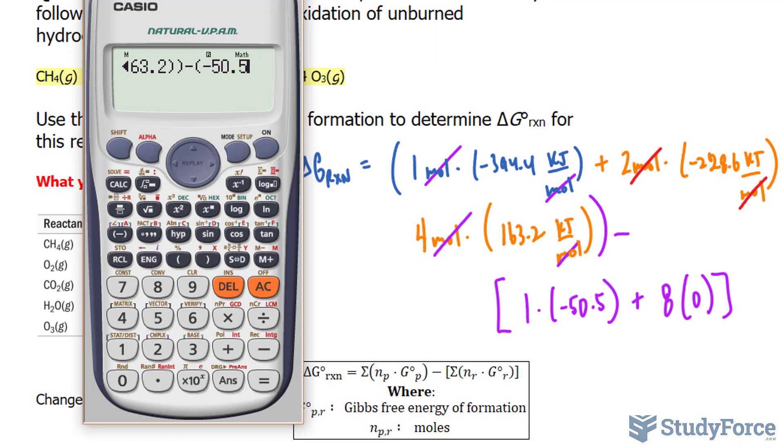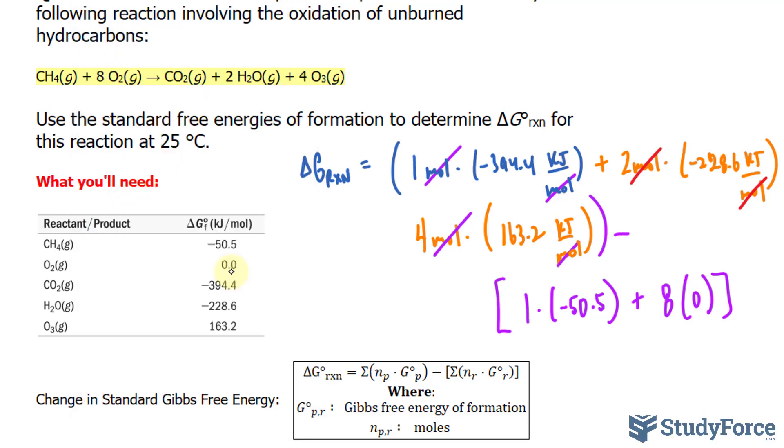Negative 50.5 plus 0. We can stop there. We end up with a delta G for this reaction of negative 148.3 kilojoules. This number is negative, which means the reaction is spontaneous.